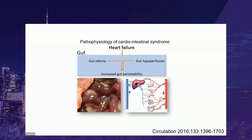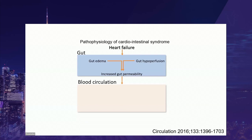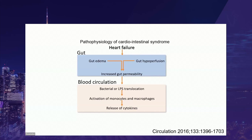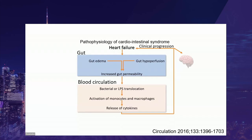The consequence will be increased gut permeability and mesenteric ischemia. Before reaching that point, there will be bacterial or LPS translocation, activation of monocytes and macrophages, and release of cytokines. The cytokines create the vasoplegia observed in septic shock, and also depress cardiac function — both right and left, as we saw in our patient. We also observe encephalopathy and brain dysfunction in those patients.